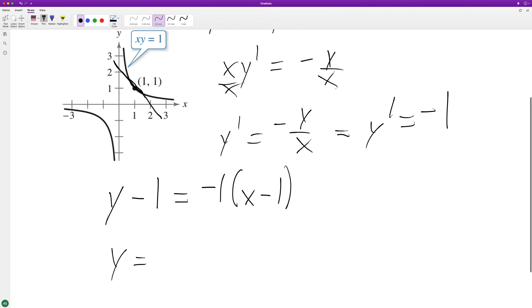So we end up with y minus one equals negative x plus one, add one. So our final equation of the tangent line equals negative x plus two.